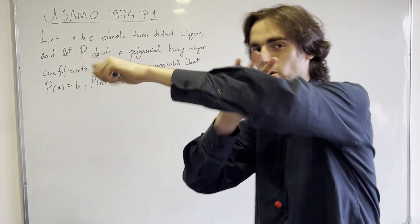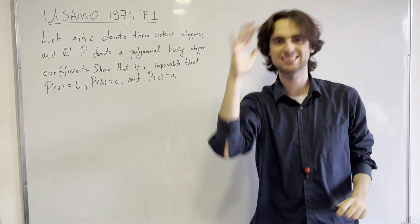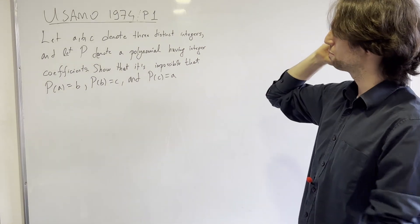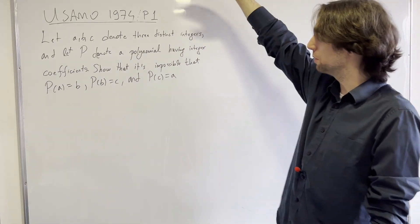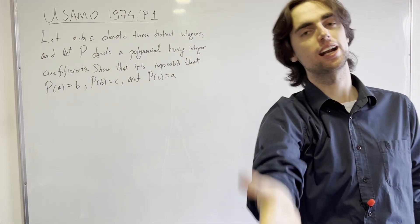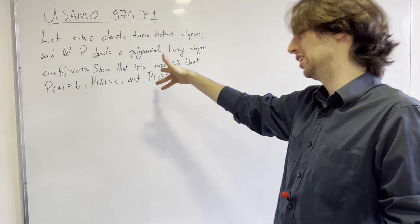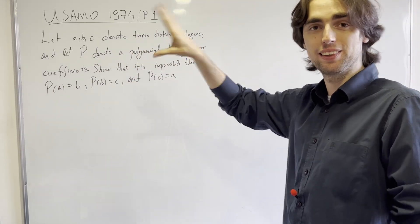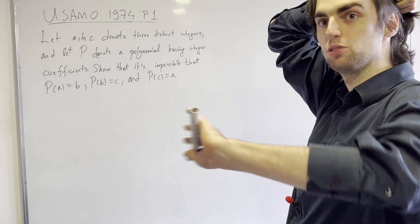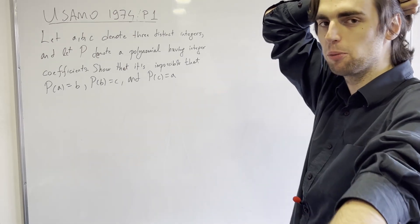Hello fellow problem solvers. Today we're going to be doing a classic polynomial number theory problem from the USAMO 1974, problem number one. Try it out, especially if you're new to polynomials and integer number theory, for a minimum of 20 minutes, ideally 40, not more than an hour.